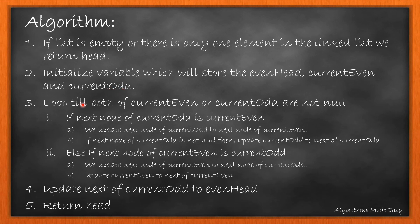We will loop till both currentEven and currentOdd are not null. Now here we write the unweaving logic. If the next of currentOdd is equal to currentEven, then we update the currentOdd next with currentEven next.